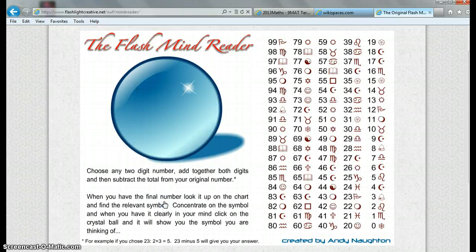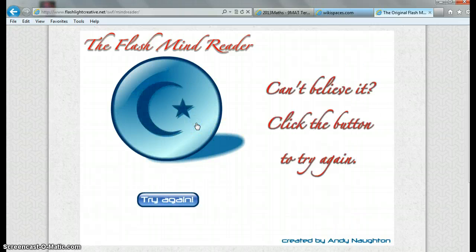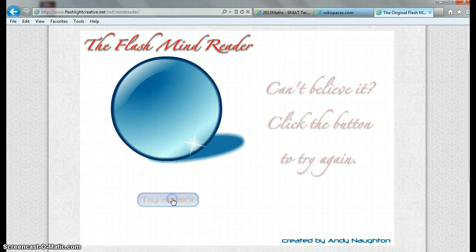Now everyone do it this time. So get a number, two-digit number, add together. Get a different one. Any two-digit number. Add the digits together. Take that total off the original number. Got it? Ready? Focus.